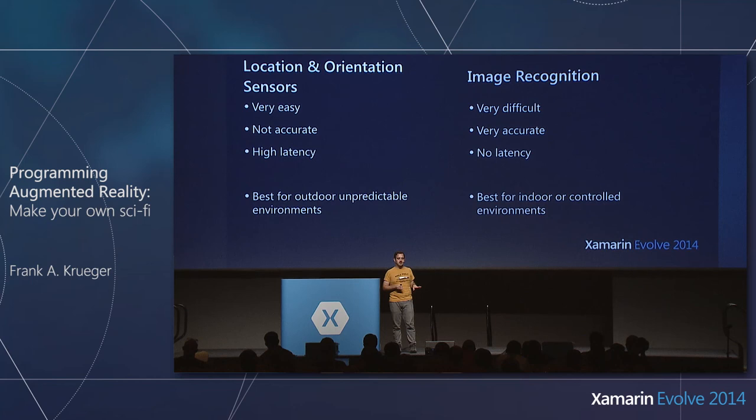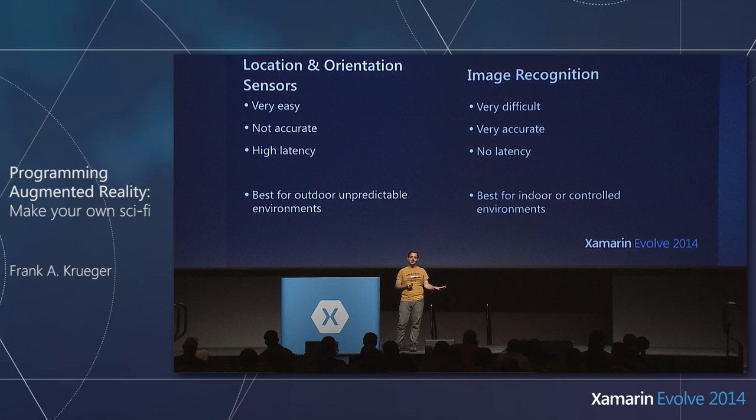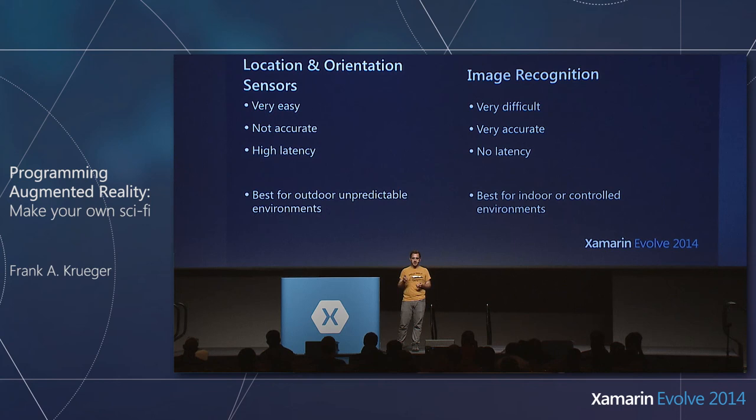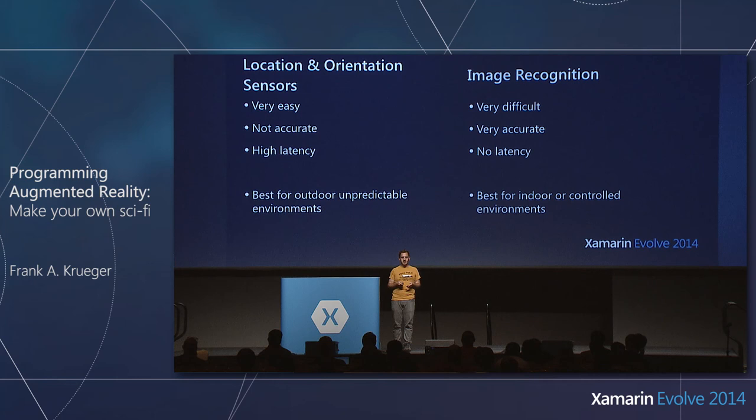There's a second approach using image recognition instead of GPS and orientation sensors — you key on different parts of the world whose exact location you know. Once you do that using image recognition, you have much better accuracy about your location. It's very difficult to do, but the benefits are accuracy and no latency. It's great for indoor environments, but you'll have to rely on sensors for uncontrolled environments.